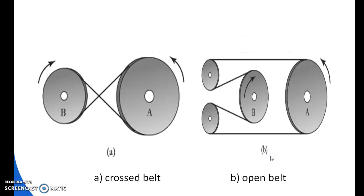Here we can see two types of belt drives. In the first diagram, two pulleys A and B are connected by a belt that intersects at the middle point — this is a crossed belt drive. In the second diagram, two pulleys A and B are connected by a belt that does not cross — this is an open belt drive.